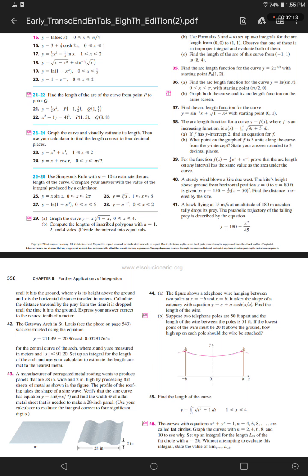Next. A steady wind blows a kite due west. The kite's height above ground from horizontal position x equals 0 to x equals 80 feet is given by y equals 150 minus 1 over 40 times (x minus 50) squared. Find the distance traveled by the kite.